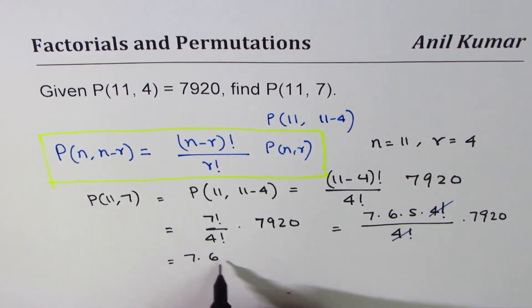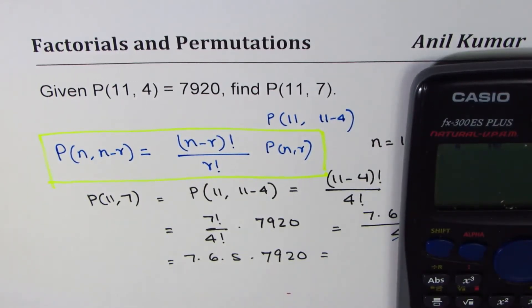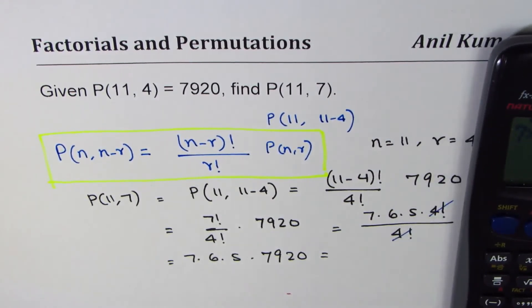So what we get is 7 times 6 times 5 times 7920. We can use the calculator to find this answer. 7 times 6 times 5 times 7920 equals 1663200.